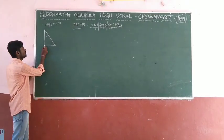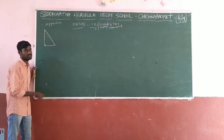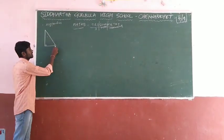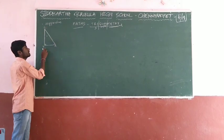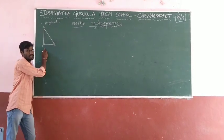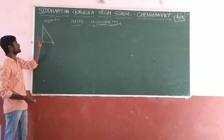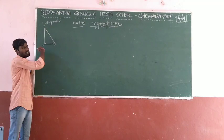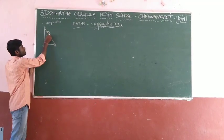In a right angle triangle, one of the angles is 90 degrees. This is the symbol of a right angle. If we consider right angle triangle ABC, angle B is 90 degrees. In a right angle triangle, the largest side is named as the hypotenuse.